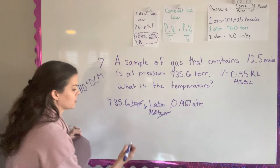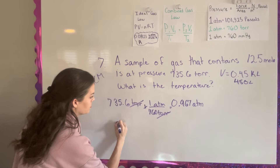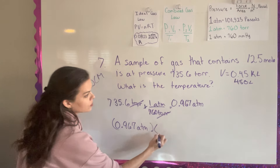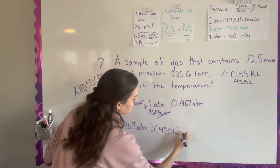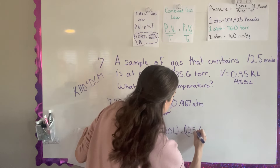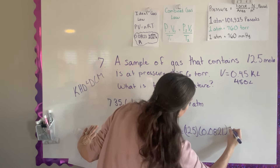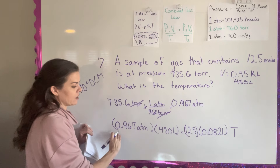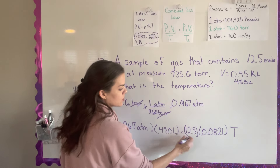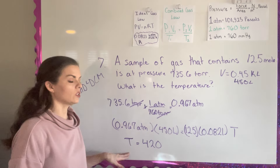Now I take all this information and plug it into the ideal gas law. Pressure times volume equals number of moles times R times T. Plugging in the pressure we calculated in atmospheres and the volume we calculated, that equals the number of moles times R times T. Check it yourself — you should get T equals 420 Kelvins, because this is a gas law and temperature is measured in Kelvins.